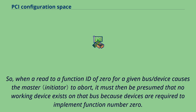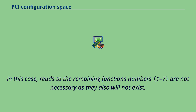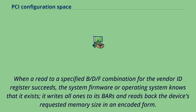When a read to function ID 0 for a given bus/device causes the master to abort, it must be presumed that no working device exists on that bus, because devices are required to implement function number 0. In this case, reads to the remaining function numbers are not necessary. When a read to a specified B/D/F combination for the vendor ID register succeeds, the system firmware or OS knows the device exists, writes all ones to its BARs, and reads back the device's requested memory size in encoded form.